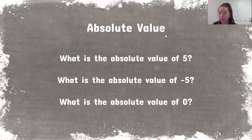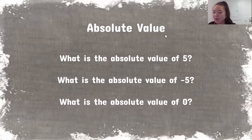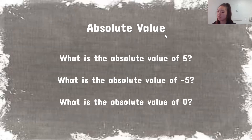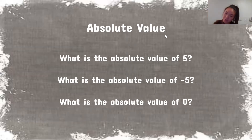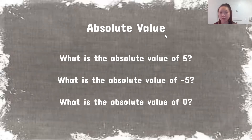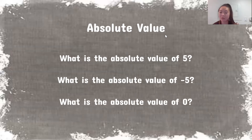Let me write that out on the number line. We write the little arrows because our number line is infinite — it goes on forever. So for negative five, counting one, two, three, four, five — the distance between zero and negative five is five. So the absolute value of negative five is five. And the absolute value of zero will always be zero, because the distance from zero to zero is always zero — there is no positive or negative zero.